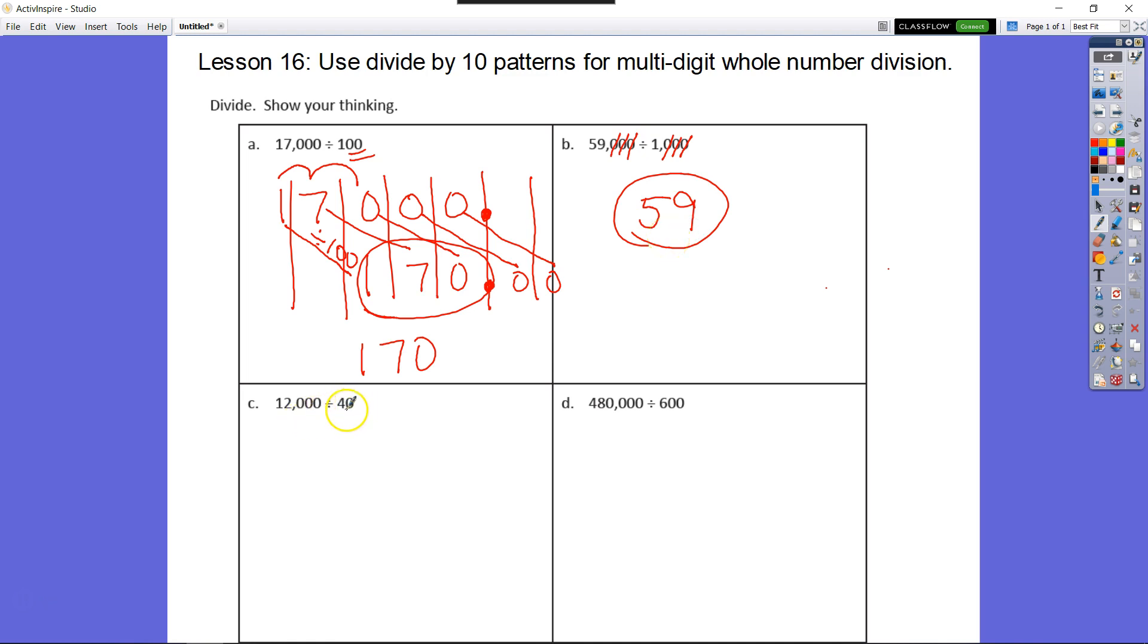Let's look down here. Now we don't have a true place value unit or base 10 number. So that's 10 times 10 is 100, 10 times 10 times 10 is 1,000. Now we have 40 as our divisor.